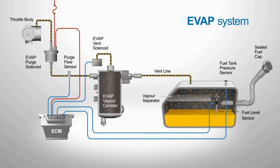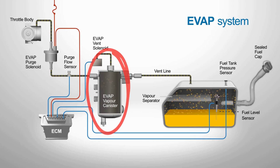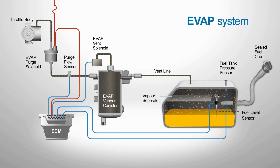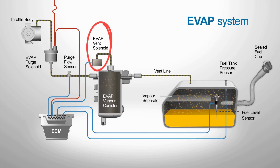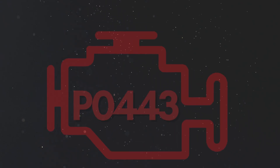When the engine is off, fuel vapors are stored in the charcoal canister instead of being released into the atmosphere. Once the engine is running and the conditions are right, the purge valve opens, allowing those stored vapors to flow into the engine where they're burned during the normal combustion process. The vent valve usually stays open, allowing fresh air to flow into the charcoal canister to ensure proper operation.